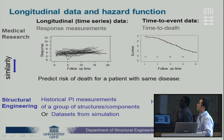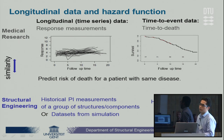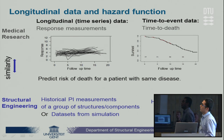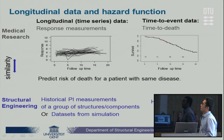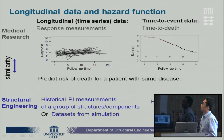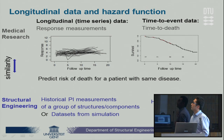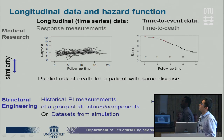This joint modeling is an active topic in the medical research field where two types of data are recorded for a group of patients subjected to the same disease. The first is the longitudinal data — the time series response measurement for each patient in this group. And the second is their time-to-death data. Based on the joint model fitted to this recorded data, the objective is to predict the deaths of a patient with the same disease. It is quite clear that similarities could be drawn from the patients and civil engineering, so it might be interesting to apply this procedure in structural engineering.